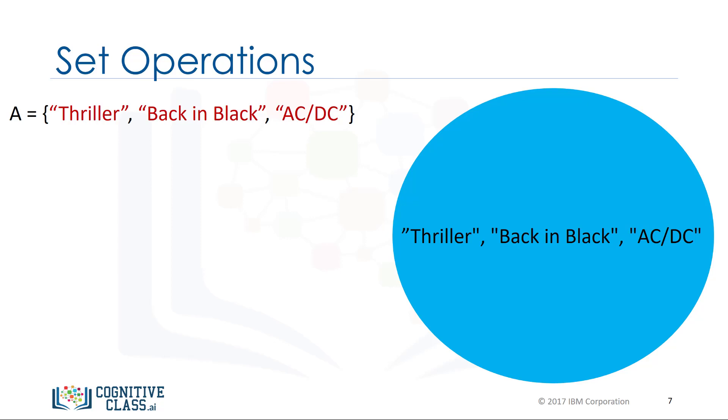We can add an item to a set using the add method. We just put the set name followed by a dot, then the add method. The argument is the new element of the set we would like to add. In this case, NSYNC. The set A now has NSYNC as an item.